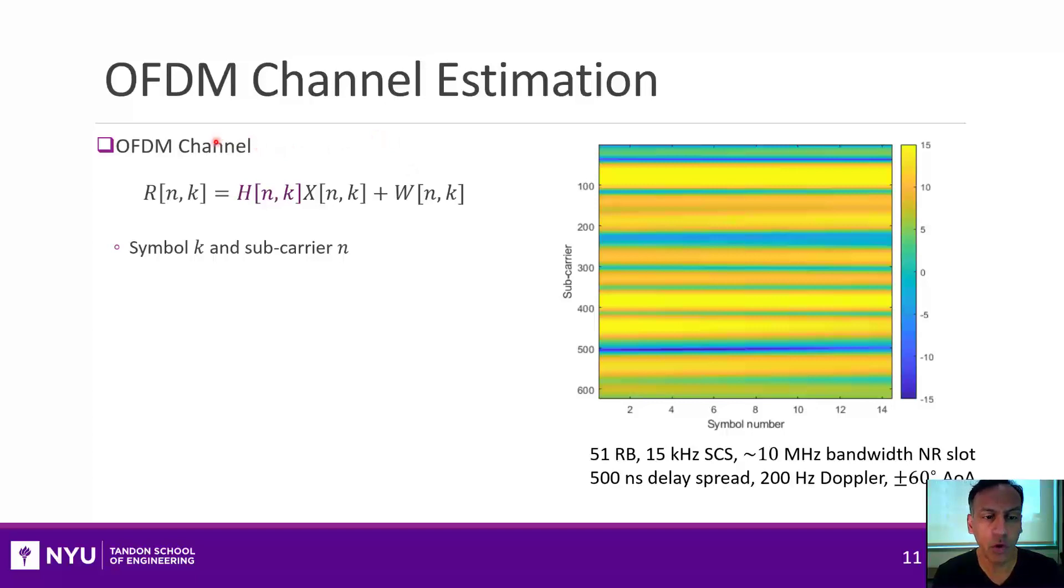So recall that the OFDM channel can be represented as an array h, which varies in frequency, which I'm denoting by n, and in time, which I'm denoting by k. So we're varying over the subcarriers and the symbol numbers.